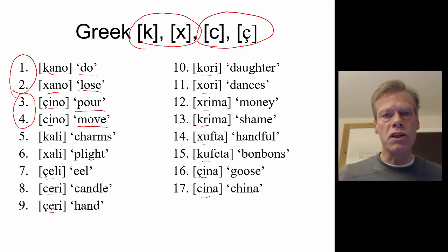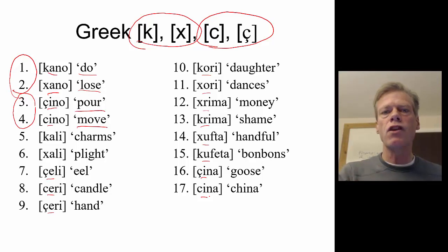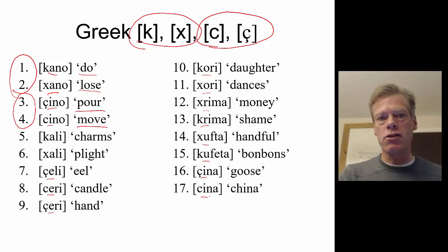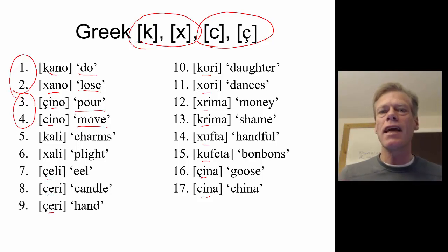What we're seeing is that the velars have the wider distribution — they don't always precede a vowel. This suggests that the velar must be the underlying representation; that's the elsewhere case.